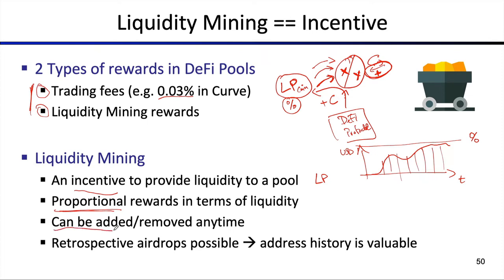Most of the time, liquidity mining benefits are set for a fixed amount of time. For example, you can think of Bitcoin as one of the earliest liquidity mining proposals — you get incentivized for your hash rate, not your monetary amount, but there's a fixed release schedule for how many coins are distributed over time. In some protocols these incentives might be removed at any time, so be aware that the incentive structure changes significantly once there are fewer liquidity mining rewards.